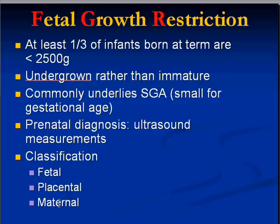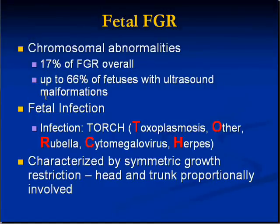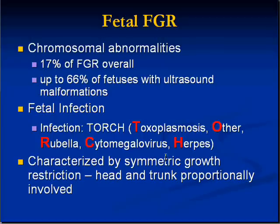On the fetal side, chromosomal anomalies account for about 17% of fetal growth restriction. Fetal infections are probably a much bigger cause, and the classic intrauterine infections are the so-called TORCH infections: T for toxoplasmosis, O for other, R for rubella, C for cytomegalovirus, and H for herpes. The last two are in the herpes family, and toxoplasmosis is a parasite. TORCH infections are the main cause of fetal infections resulting in fetal growth restriction.